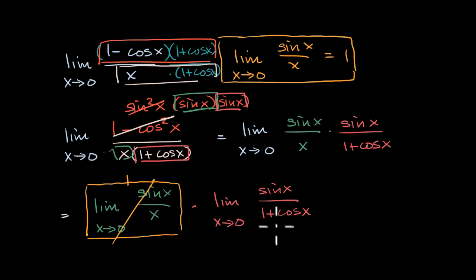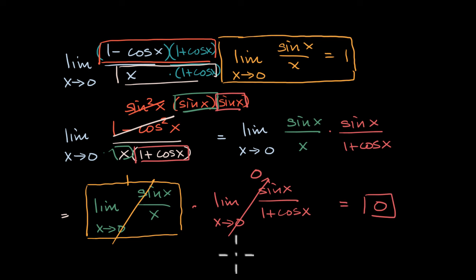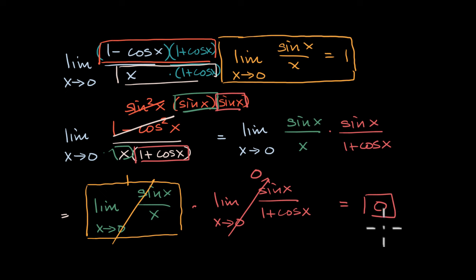So this whole limit is just going to be dependent on whatever the second expression equals. This is pretty straightforward: as x approaches zero, the numerator approaches zero since sine of zero is zero, and the denominator approaches one plus cosine of zero, which is one plus one, equaling two. So this is approaching zero over two, which is just zero. One times zero is zero, and we're done. Using that fact, trig identities, and algebraic manipulation, we showed the limit as x approaches zero of one minus cosine of x over x is equal to zero. I encourage you to graph it — you'll see this makes sense from a graphical point of view as well.